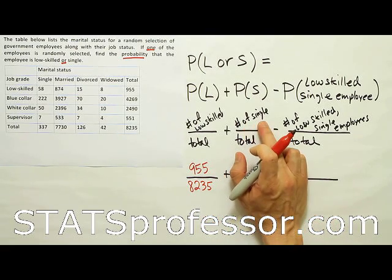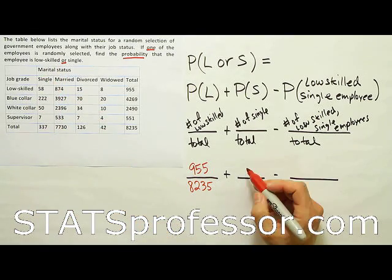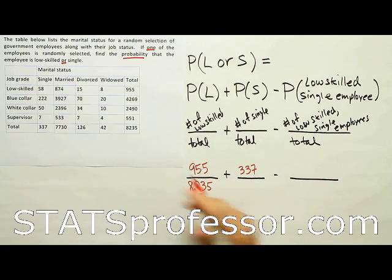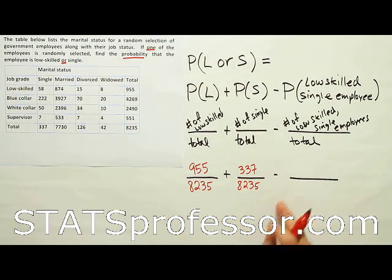I don't have the number of single workers. Number of single workers. That'll be 337. Divided by the grand total of 8,235.